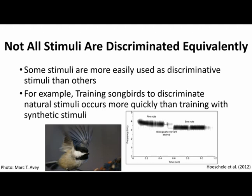This next topic is another example of ease of conditioning not related to overshadowing. Even when stimuli aren't presented as a compound, the nature of the stimulus itself can influence how well we learn about it. Some stimuli are more easily used as discriminative stimuli than others. For example, when working with songbirds, they learn much, much faster using natural stimuli than synthetic stimuli. The spectrogram shown here is a visual representation of their Phoebe song — these birds are really quick at learning these songs because it's biologically relevant, involved in mating, territory defense, and more.